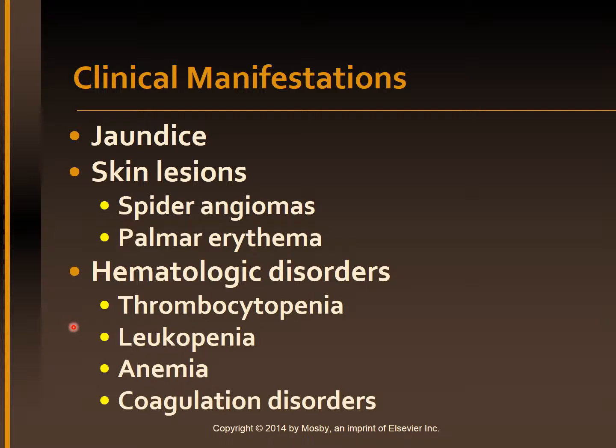In cirrhosis, the production of bile is reduced, which prevents absorption of fat-soluble vitamins A, D, E, and K. Without vitamin K, clotting factors 2, 7, 9, and 10 are not produced in sufficient quantities and the patient is susceptible to bleeding. Coagulation problems are manifested by bleeding tendencies such as epistaxis, purpura, petechiae, easy bruising, gingival bleeding, and heavy menstrual bleeding.